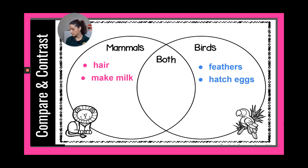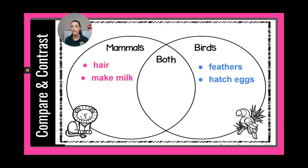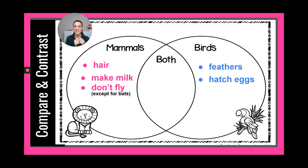Next, let's think about how they move. One thing unique to birds is that some birds fly. Do any mammals fly? Only one type of mammal flies — that's the bat, which is an exception. So mammals don't fly, except for bats, and some birds fly, though not all.